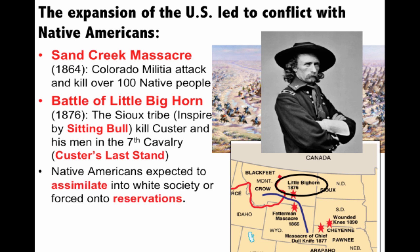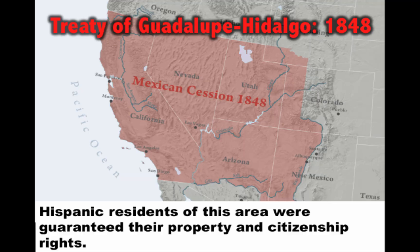Native Americans were expected to assimilate into white society or were forced onto reservations during this time period — both things happening increasingly throughout the late 19th century. Also, following the Treaty of Guadalupe Hidalgo in 1848, the Californios — the Hispanic residents of the area — were guaranteed property and citizenship rights under the treaty. Unfortunately, very often those rights were not respected, and their land was lost through court actions or forced sale by Anglo settlers coming into the Southwest.